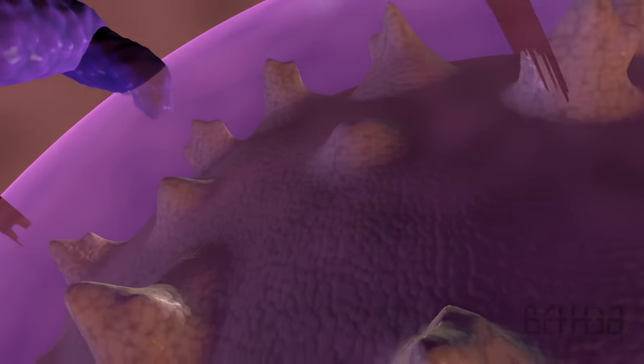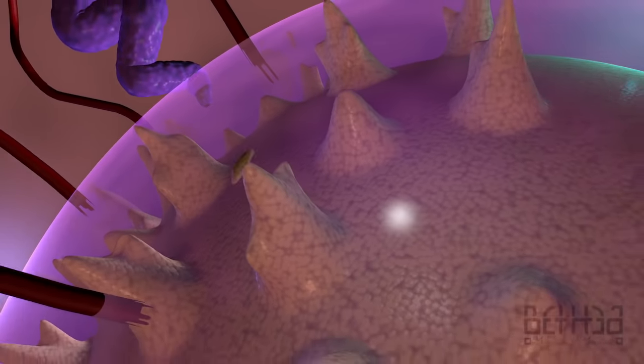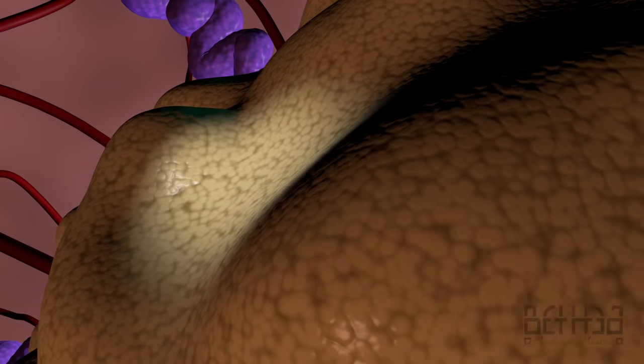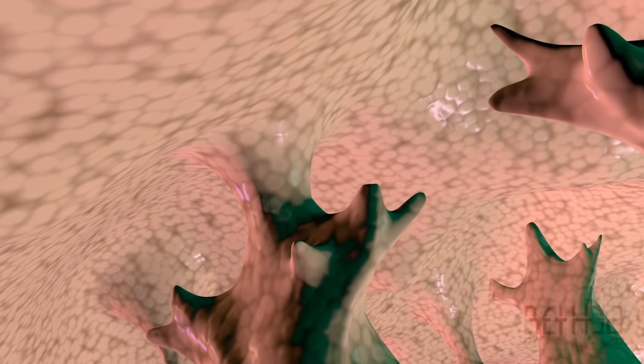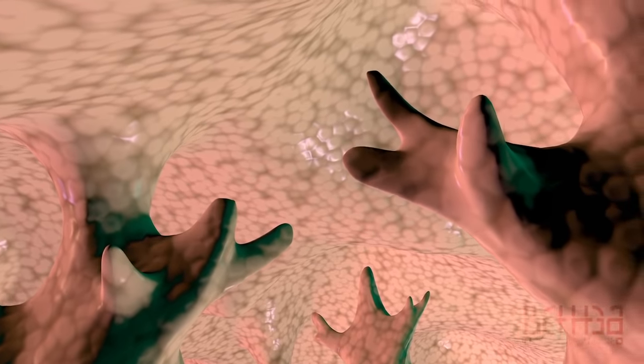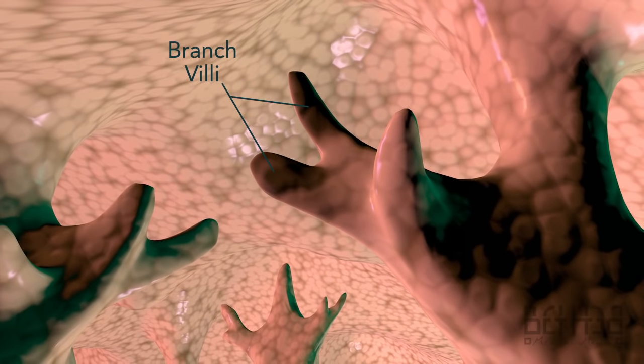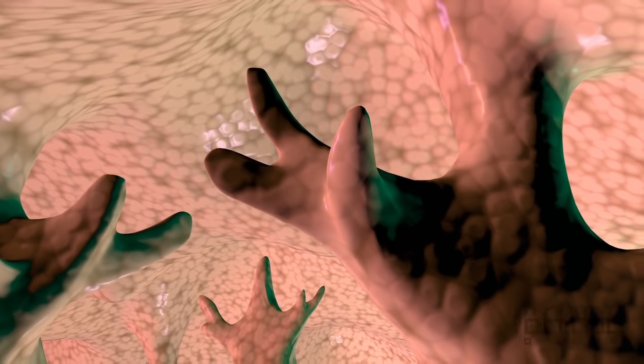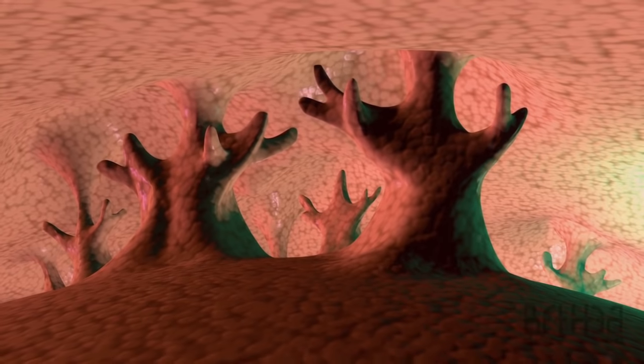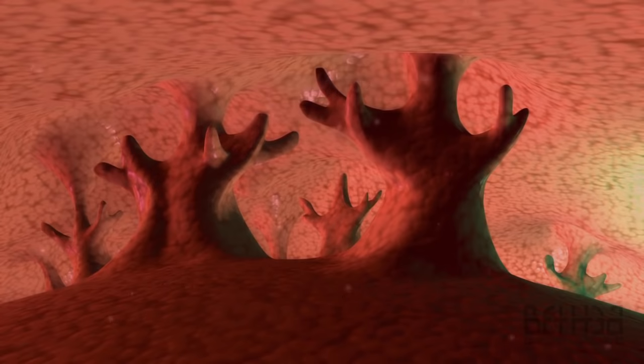Cytotrophoblast cells from the tertiary villi grow toward the deciduae basalis and spread across it to form a cytotrophoblastic shell. Villi that are connected to the deciduae basalis through the cytotrophoblastic shell are called anchoring villi. Villi growing from the sides of the stem villi are called branch villi. These branch villi are surrounded by the intervillus space and will serve as the main sites of exchange between mother and fetus.